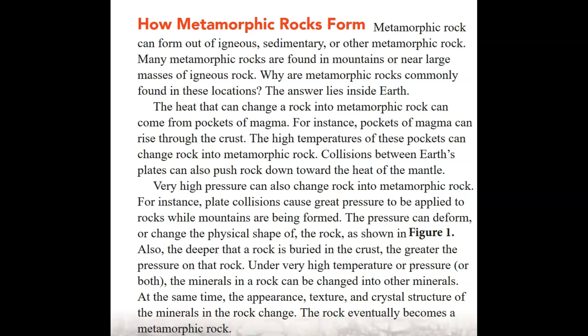Many metamorphic rocks are found in mountains or near large masses of igneous rock. The heat that can change a rock into metamorphic rock can come from pockets of magma rising through the crust. Collisions between Earth's plates can also push rock down toward the heat of the mantle. Very high pressure can also change rock into metamorphic rock — plate collisions cause great pressure to be applied to rocks while mountains are being formed, deforming the physical shape of the rock.